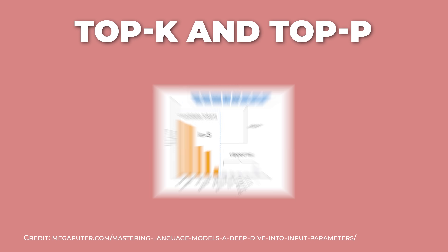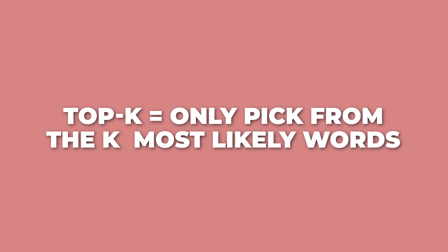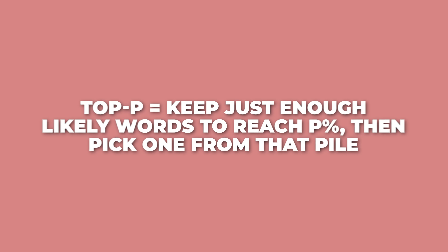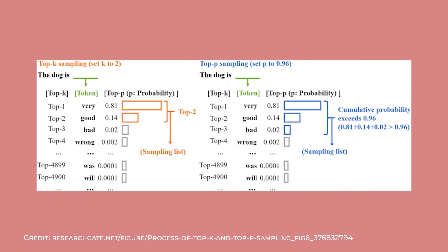Temperature works with two other controls called top K and top P. These limit which words the model can choose next. Top K says only pick from the K most likely words — so if K is 5, the model can only choose from its top 5 guesses. Top P is a little bit smarter: it builds a pool of words until their combined likelihood hits a certain percentage, like 90%. This pool grows or shrinks depending on how confident the model is, giving you a nice balance of consistency and creativity.